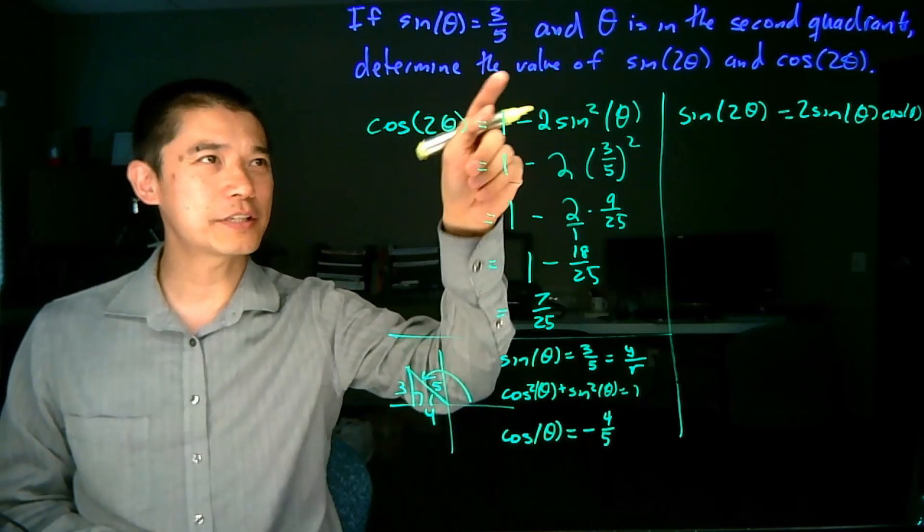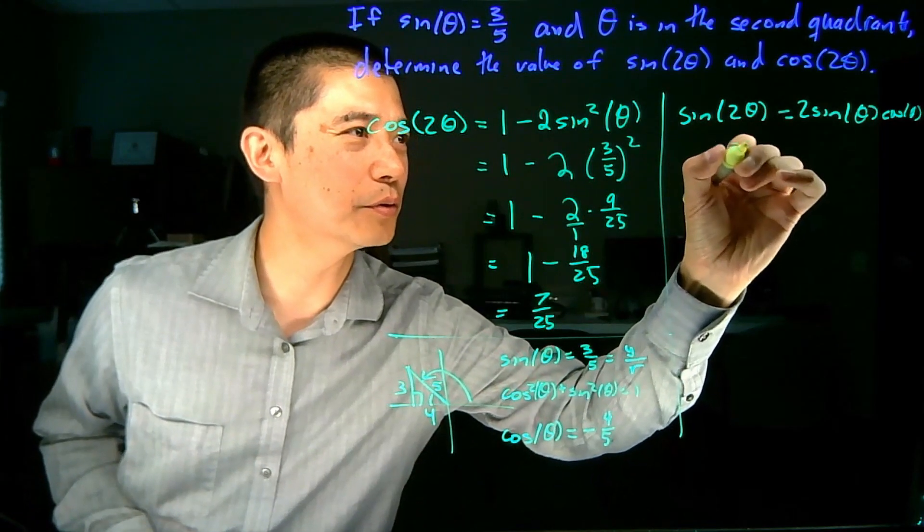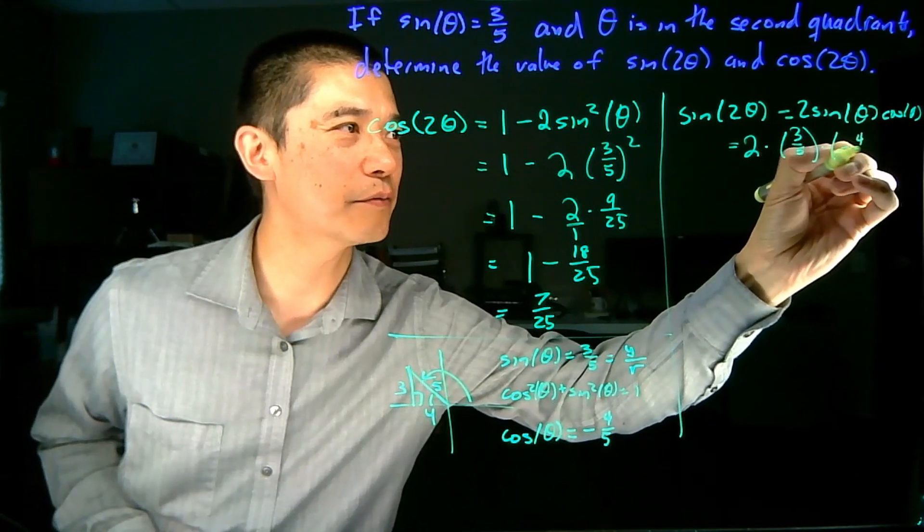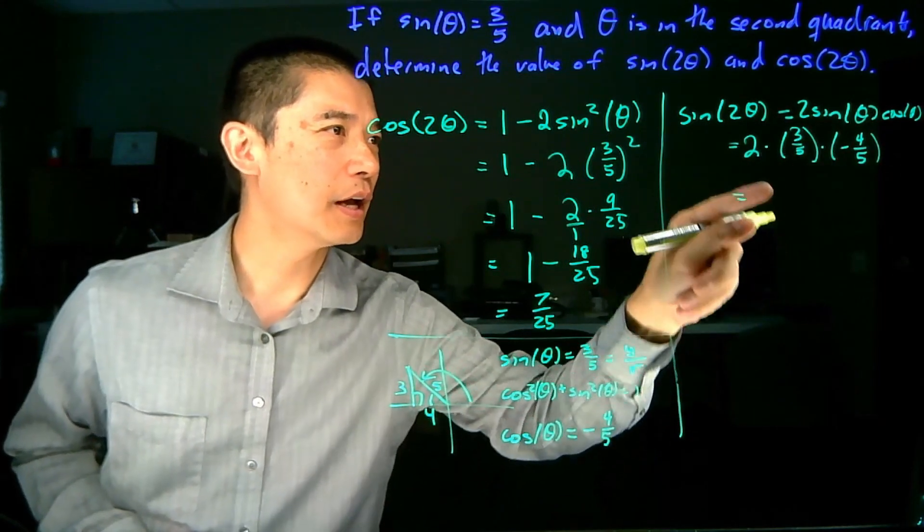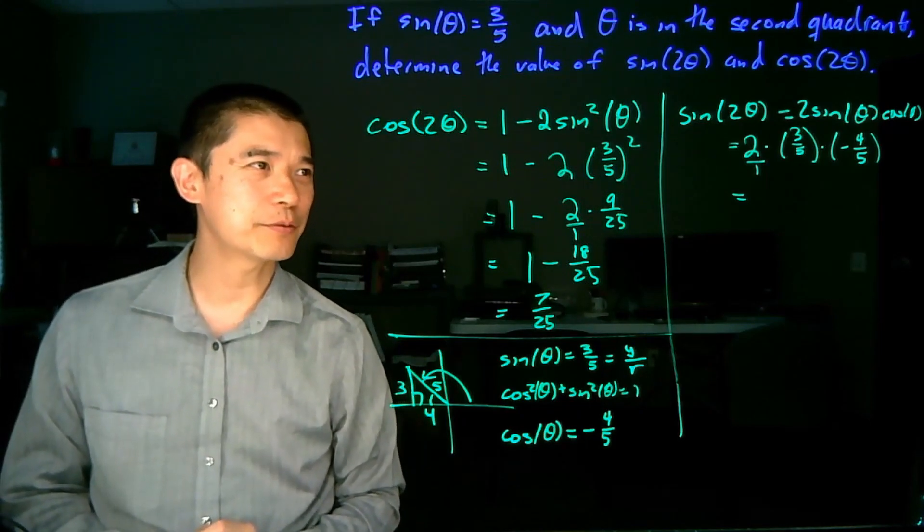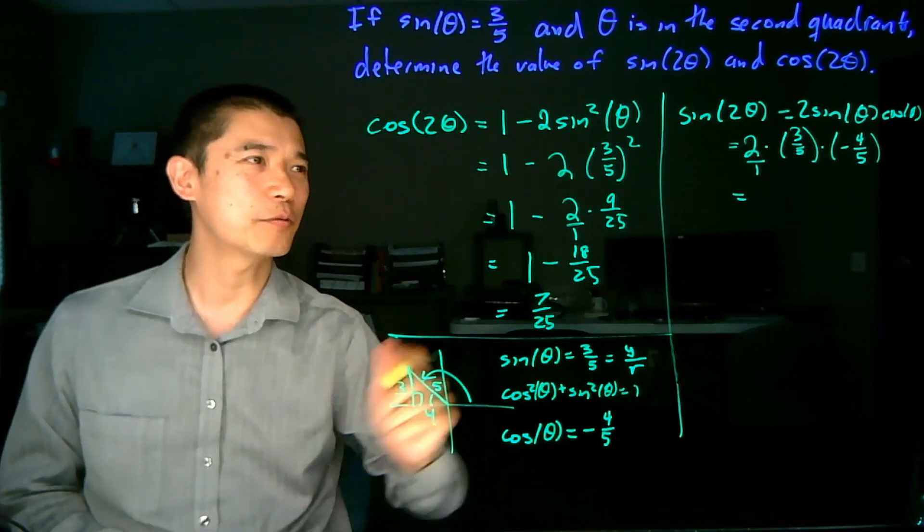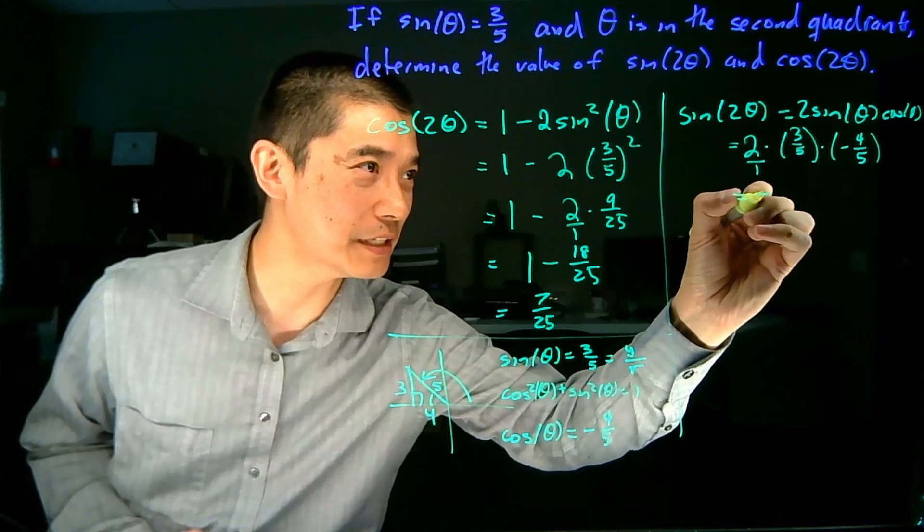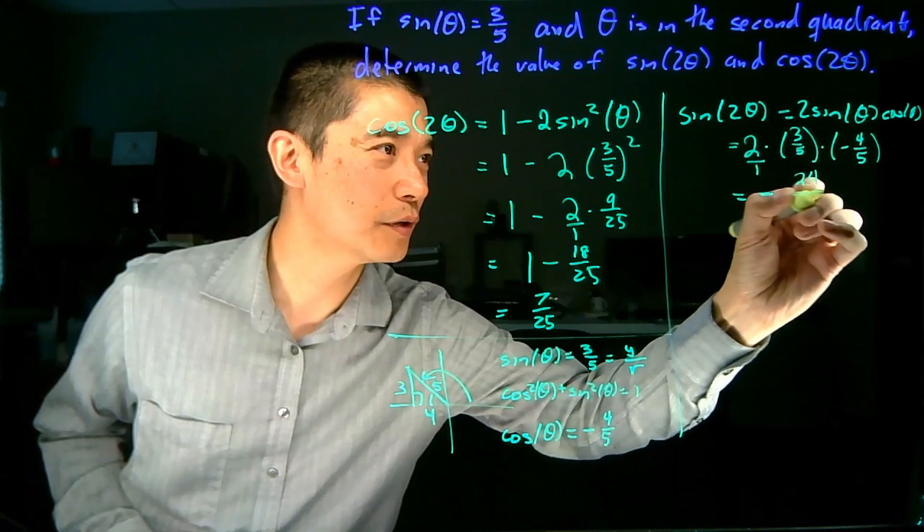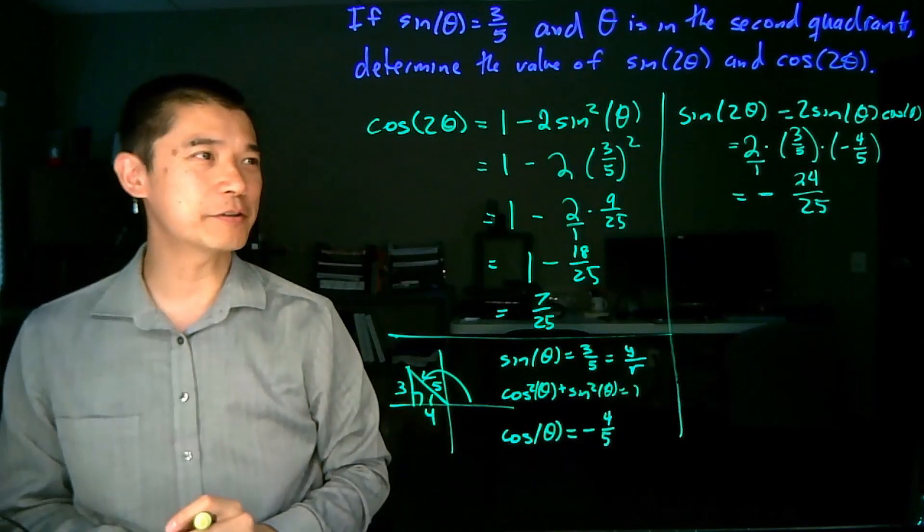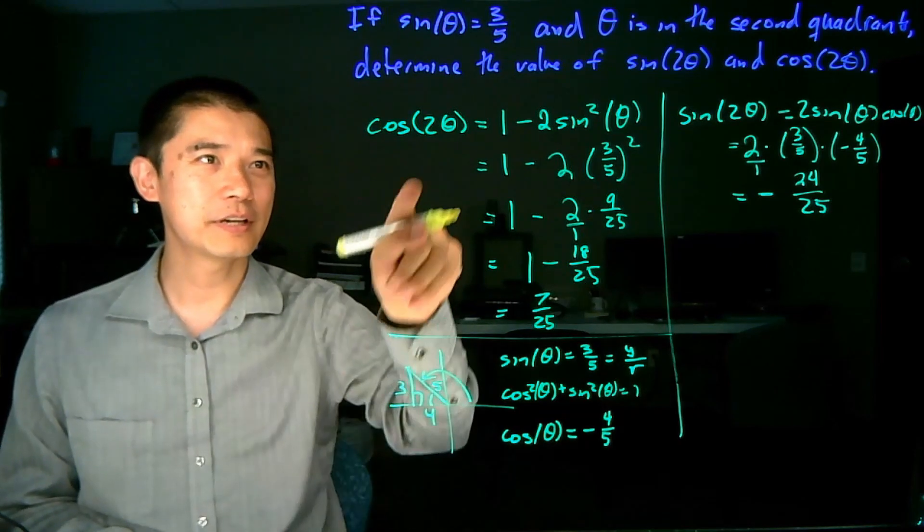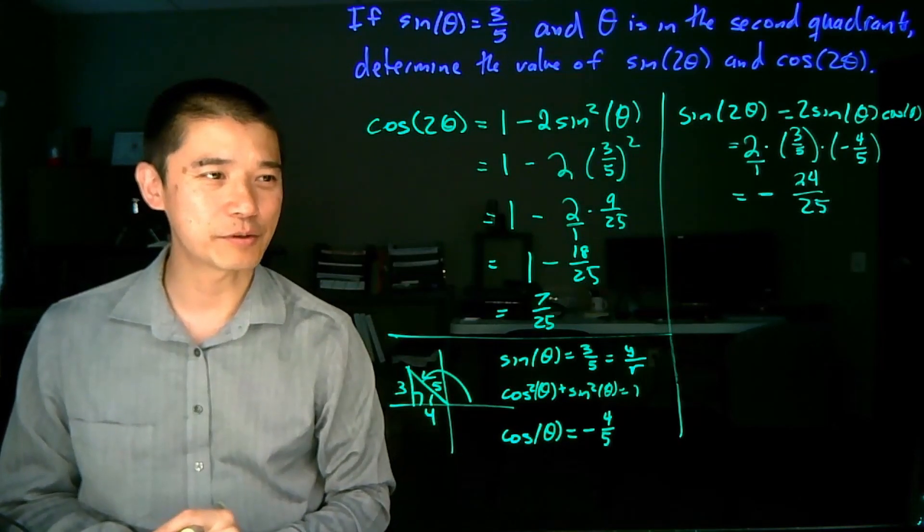Now that we have this value, it's just a matter of plugging things in. This is equal to 2 times 3/5 times negative 4/5. 2, well, go ahead and put it over 1, 2/1 times 3/5 times negative 4/5. So it's going to be positive, positive, so it's going to be a negative. The numerator, 2 times 3 is 6, 6 times 4 is 24, denominator is 5 times 5, which is 25. So sine of 2 theta is negative 24/25, and then cosine of 2 theta is 7/25.